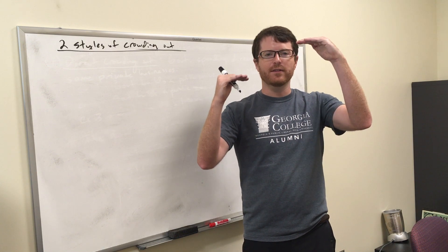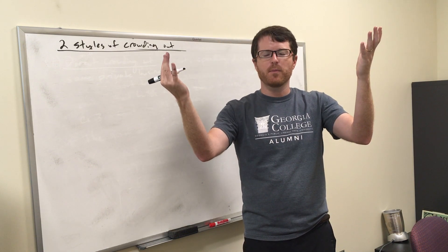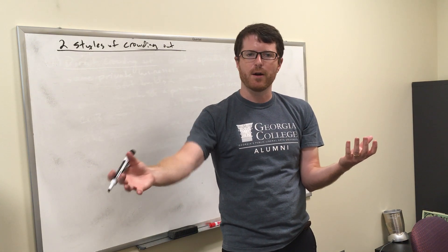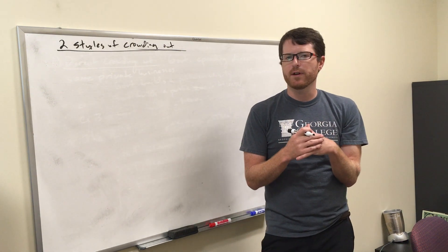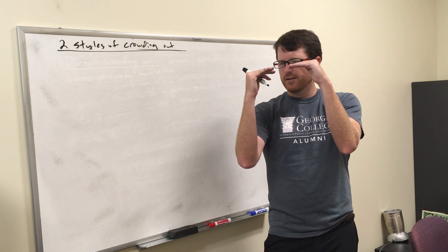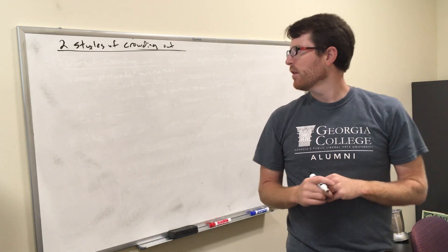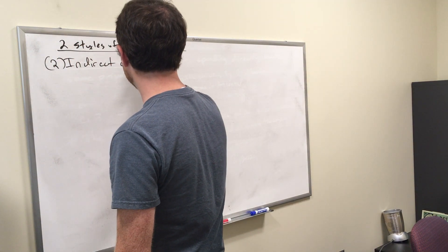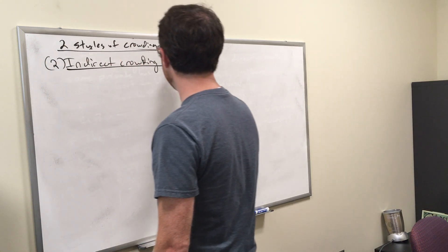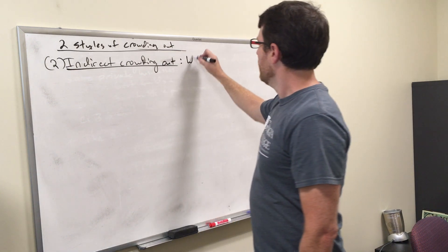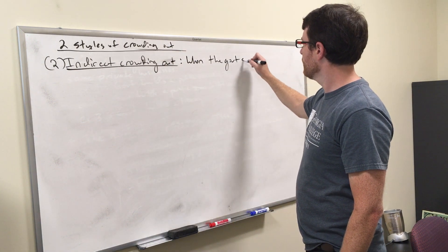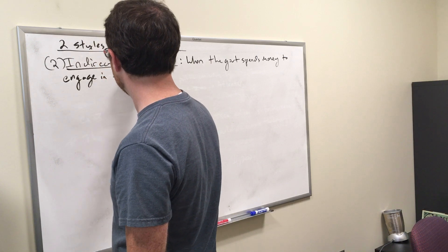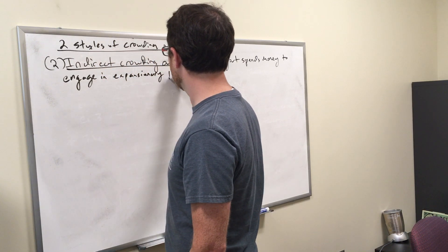Let's start with direct crowding out. It's hard to define but an easy concept — once you see a couple of examples you'll understand it. Direct crowding out is when government spending directly hurts private businesses.